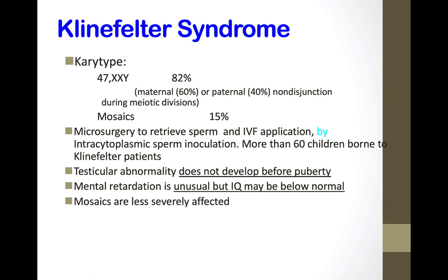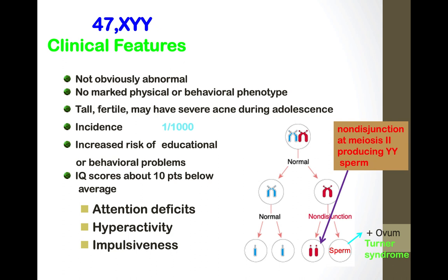Testicular abnormality in Klinefelter does not develop before puberty. Mental retardation is unusual but IQ may be slightly below normal — one way they can be identified early. 47,XYY individuals will have lower IQ scores and tend to be more attention-deficit, hyperactive, impulsive, and slightly more aggressive, though not obviously clinically abnormal.